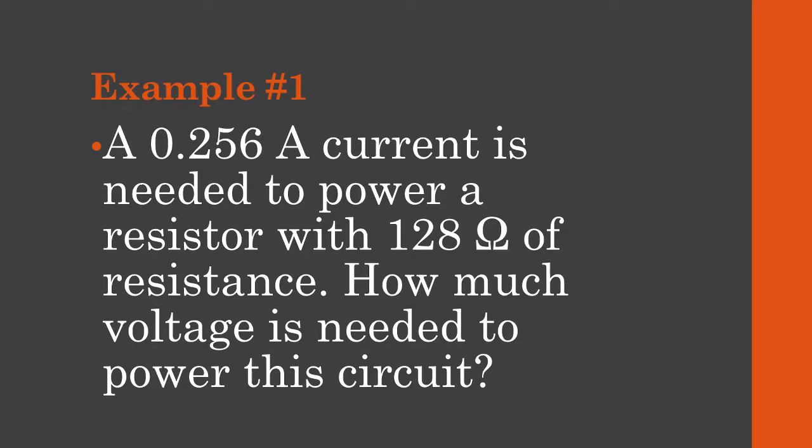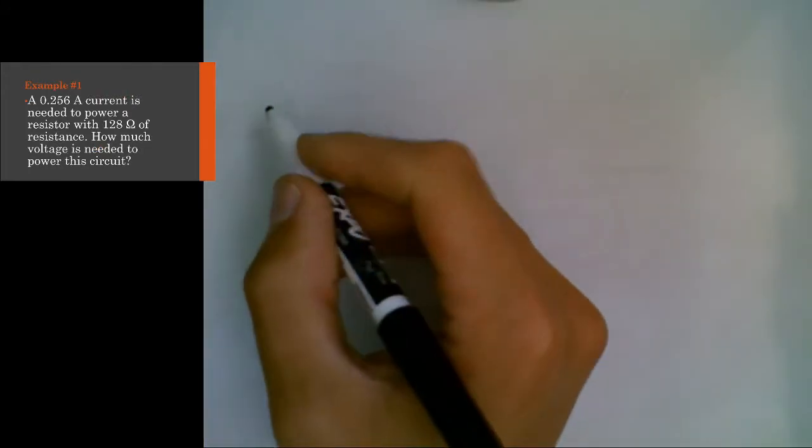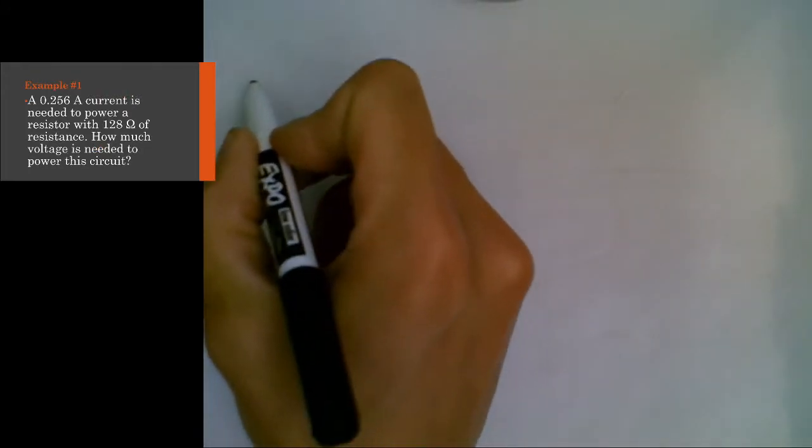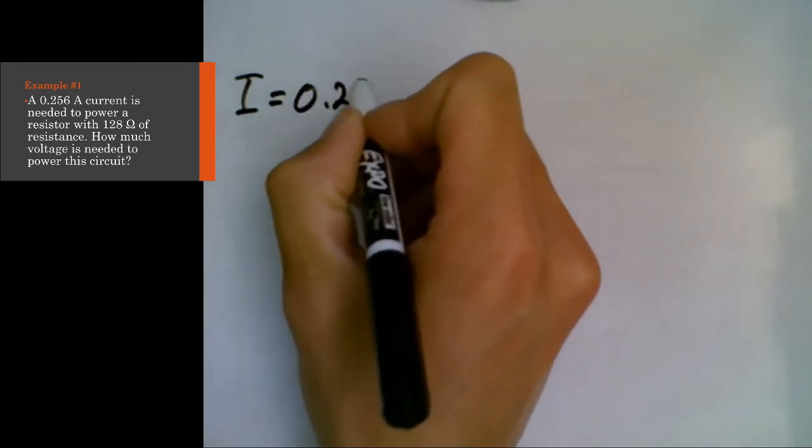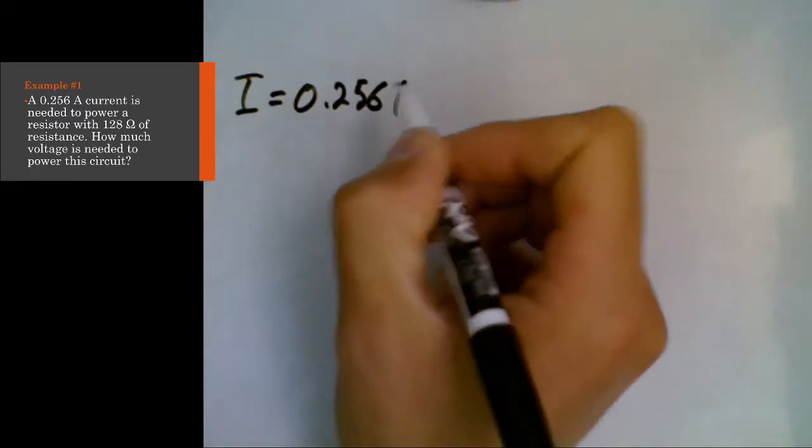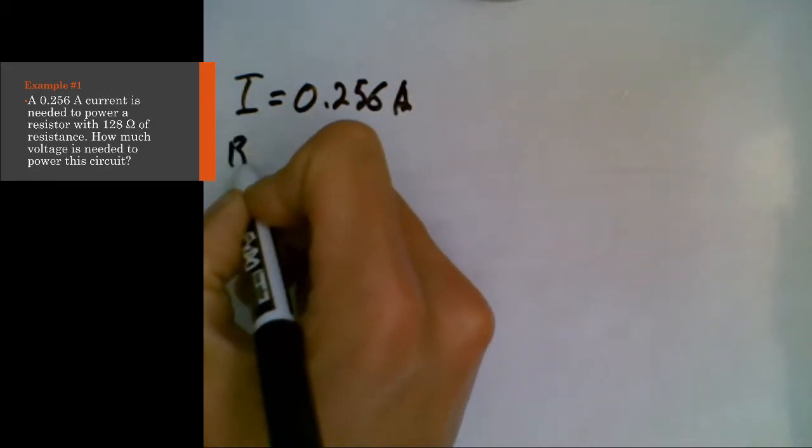If you take a look at this example, it tells us that we have 0.256 amps of current needed to power a resistor with 128 ohms. One of the first things I like to do when working with physics problems is organize my information. So 0.256 amps, I know immediately that's the current.